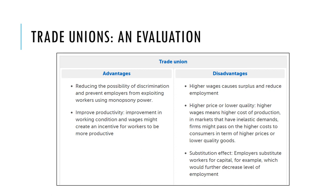Unions may also undermine their own role: by using collective bargaining to increase wages, they create an incentive for firms to substitute labour for capital and move to more capital-intensive production, thus removing the need for further workers in the future and decreasing the level of employment.